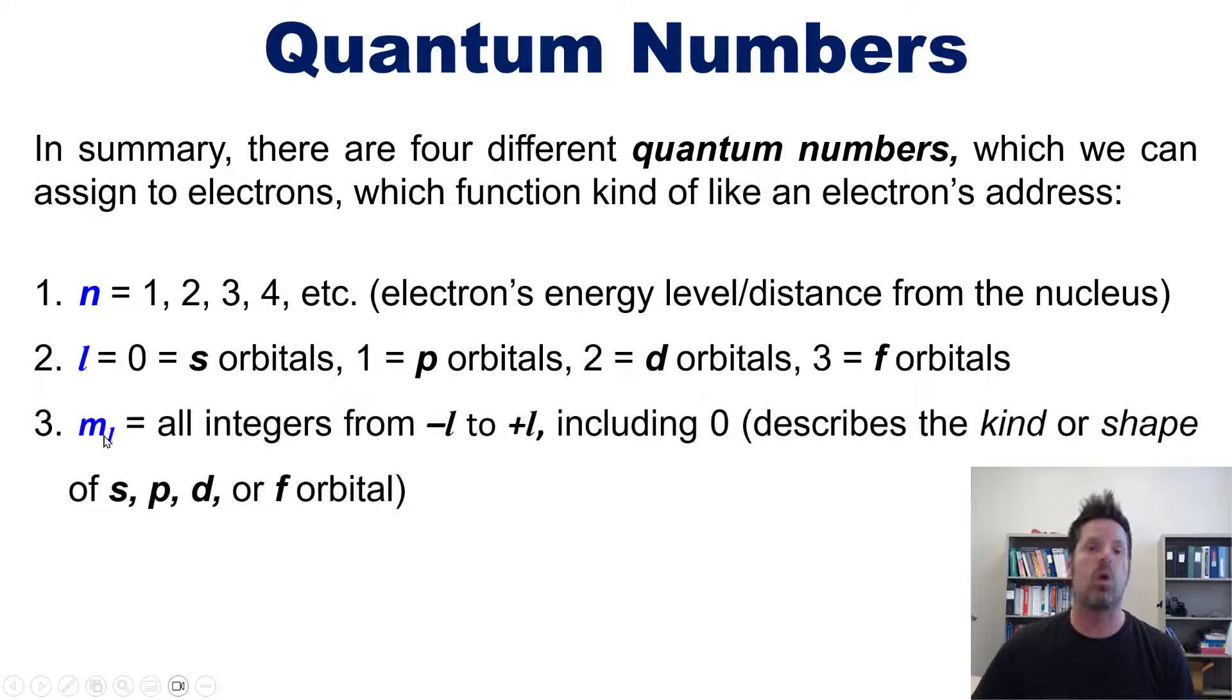The third is the m sub l, or magnetic quantum number, which can be any integer from minus l to plus l, including zero. It's going to vary depending on what kind of orbital you're discussing. These describe the kind or shape of s, p, d, or f orbitals.